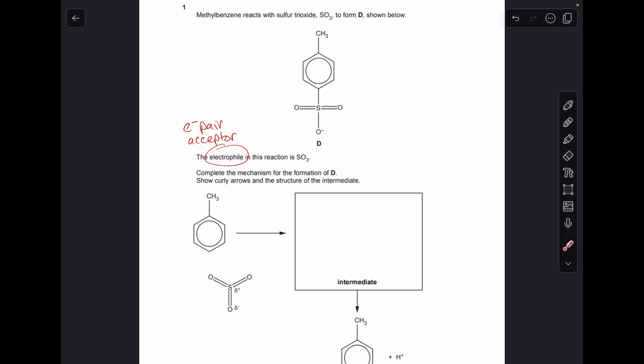And I've just written up there a reminder that an electrophile is an electron pair acceptor. So we've got to come up with a mechanism for the formation of D, curly arrows, etc., and the structure of the intermediate.